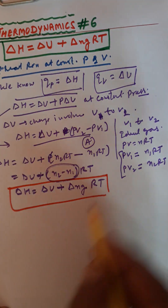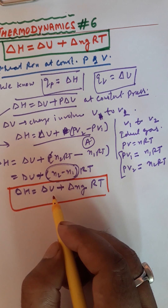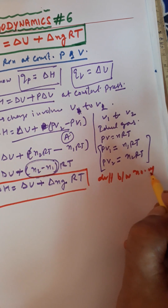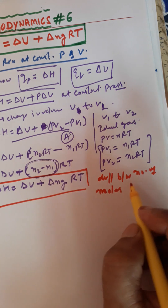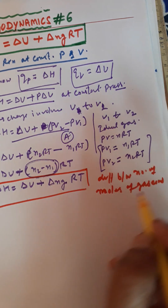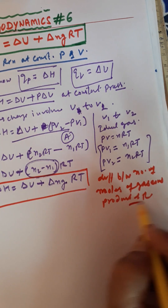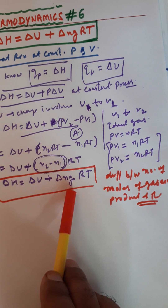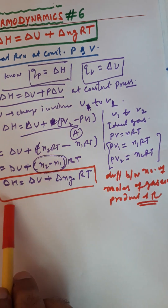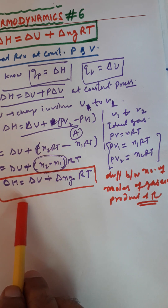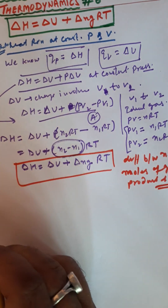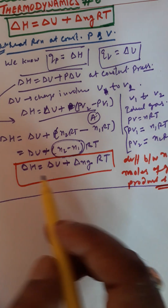यह equation proof हो गई। यहाँ पर ΔH change in enthalpy है, ΔU change in internal energy है। ΔNg क्या है — यह है difference between number of moles of gaseous products and reactants। ध्यान रखना — ΔNg कैसे निकालेंगे: जो equation होगी gaseous state में जितने product के moles होंगे उतनी minus reactant के moles — हम इनको minus करेंगे।